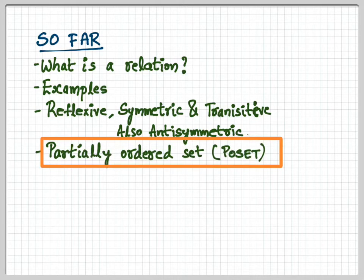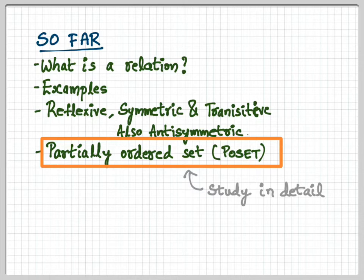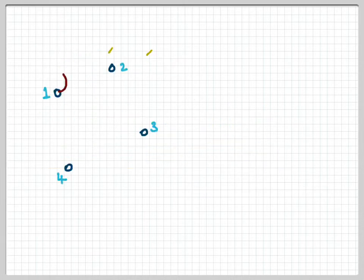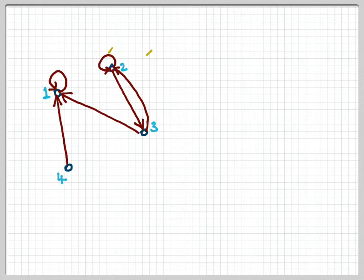What is a partially ordered set? We are going to study this in detail right now — we have only defined it so far. Look at this example: the same relation and its graph representation that we saw before.